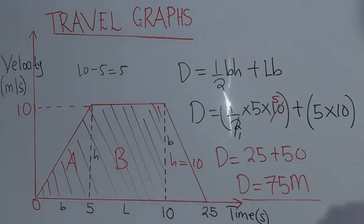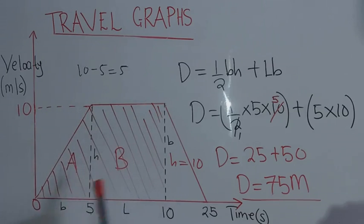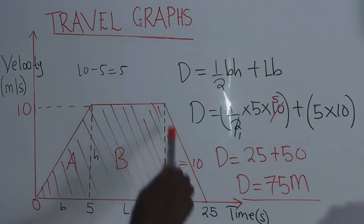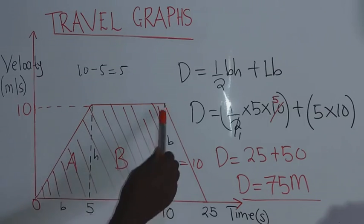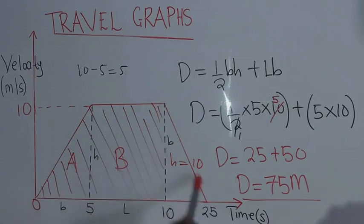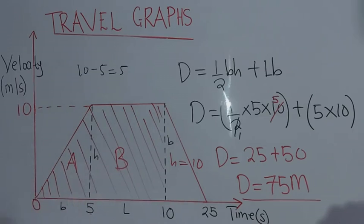We found the same value for distance using both methods. You can either use the trapezium formula or split the shape into a triangle and a rectangle. Remember, this was the distance in the first 10 seconds. If they ask for the total distance of the whole journey, find the distance of the remaining triangle and add it to the 75 meters. Thank you for watching — please subscribe to my YouTube channel.